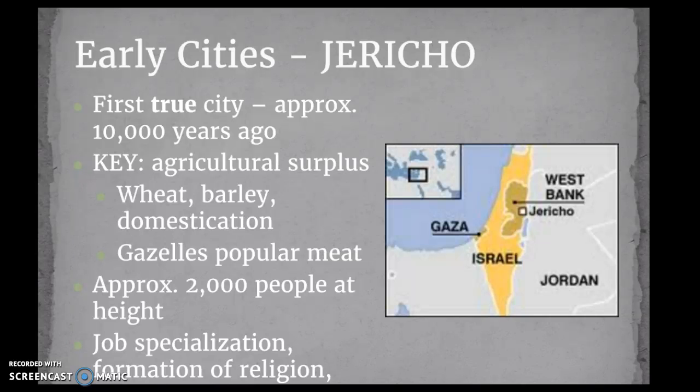One of the first cities that develops is along the west bank of the Mediterranean — an early city called Jericho. It's not technically part of Mesopotamia, but it's interesting to look at some of the first cities that develop before Mesopotamian civilization really rises. This is the first true city, approximately 10,000 years ago, whereas Mesopotamia we're looking at around 6,000 to 7,000 years ago. The key was the development of agricultural surplus, which allowed them to create permanence, domesticate animals, and really start building cities.